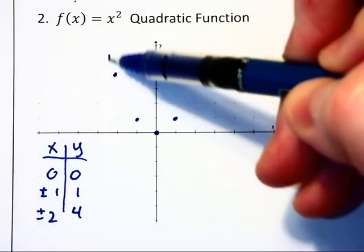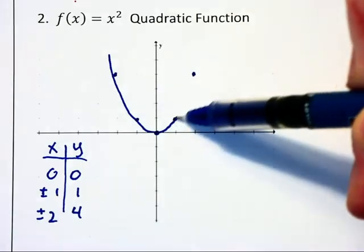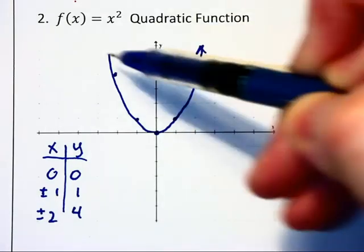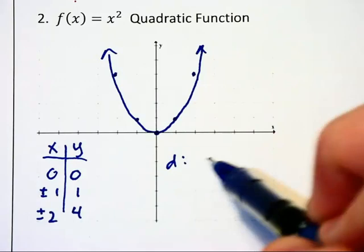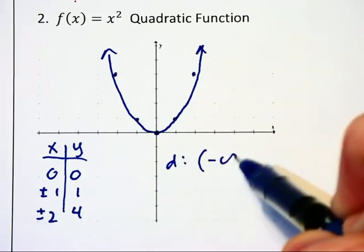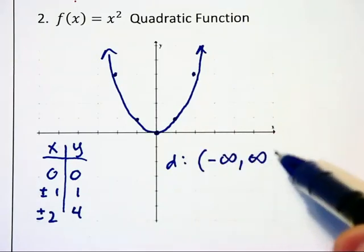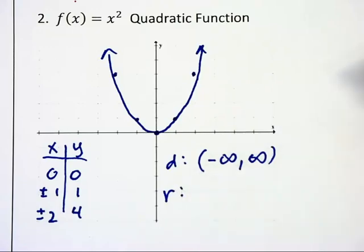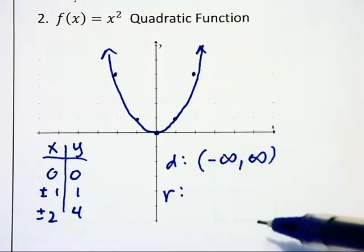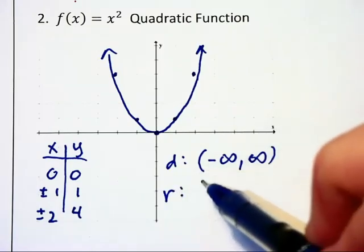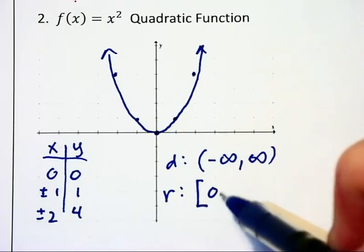This is a u-shaped graph which is known as a parabola. And its domain is all real numbers because it goes to the left and right forever. However, its range never has any y values below the x axis and so it is only from 0 which we include up to infinity.